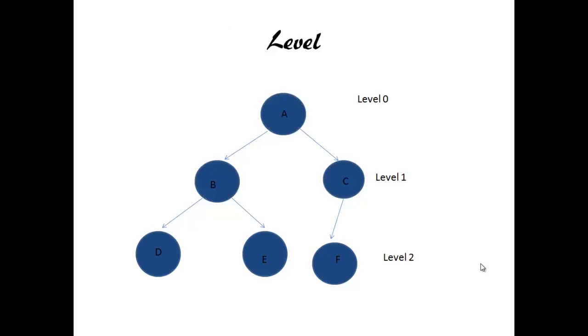Level of a node. Level of a node is defined by 1 plus number of connections between node X and root. If node is F, level will be 2. If node is B, the level is 1.